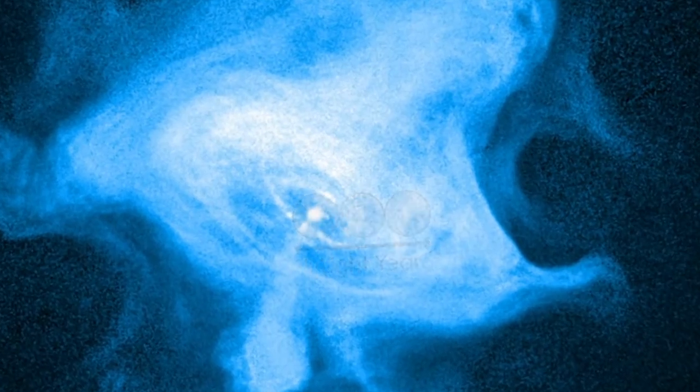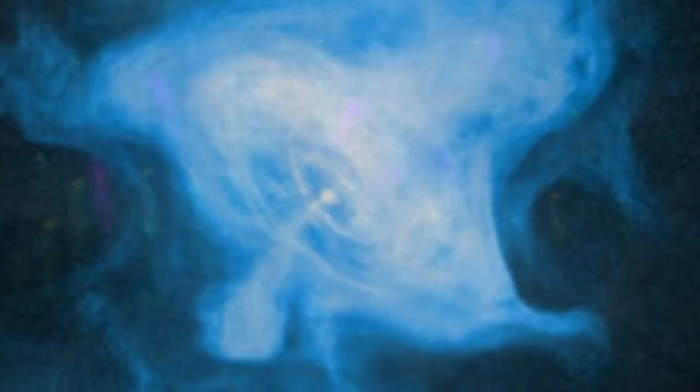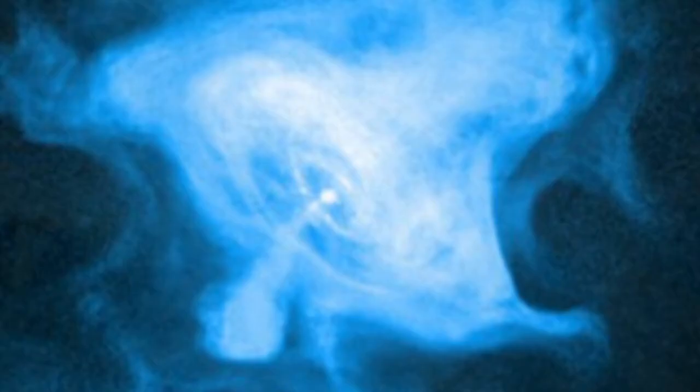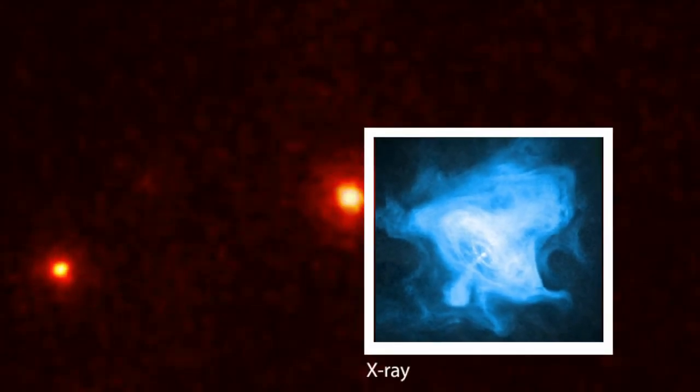And rapid changes in the rise and fall of gamma rays imply that the emission region is very small, comparable in size to our solar system. The Chandra observations will likely help scientists hone in on an explanation of the gamma ray flares one day.